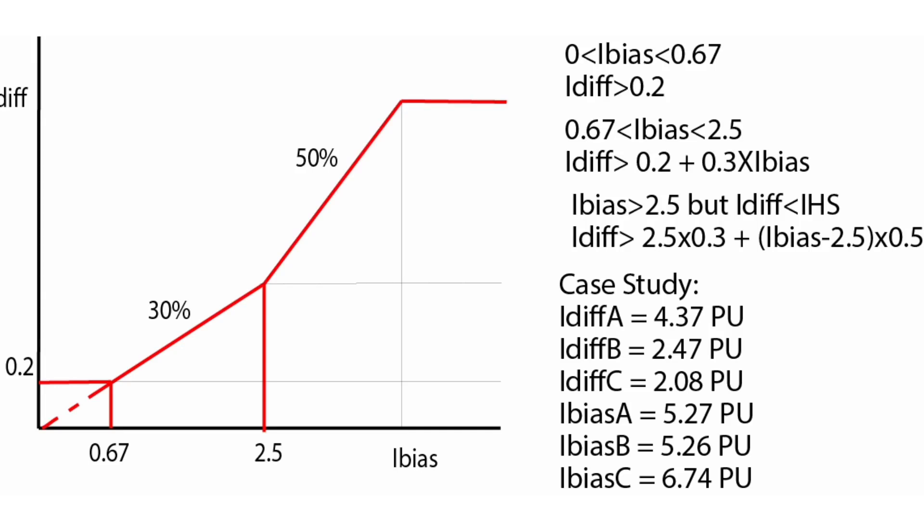Hello friends, today I will discuss a case study of a differential relay which got tripped by differential red phase and differential yellow phase — or phase A and phase B differential current.